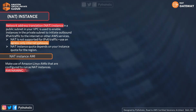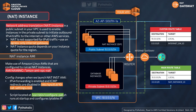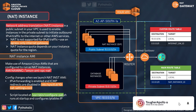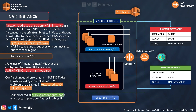Now let's talk about the NAT Instance — it's an EC2 instance that acts as a NAT device. Just like any EC2 instance, you have to create and manage it yourself, which is why AWS recommends using NAT Gateway instead. Nevertheless, NAT Instance — or Network Address Translation instance — also resides in the public subnet and helps enable instances in the private subnet to initiate outbound IPv4 traffic to the internet or other AWS services. It does not support IPv6 traffic; for that you need an egress-only gateway. NAT Instance quota depends on your EC2 instance quota for that region.